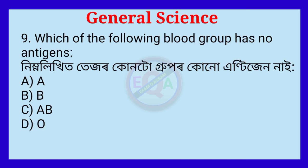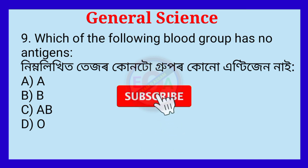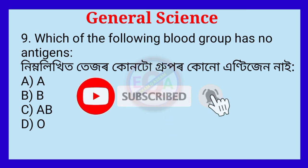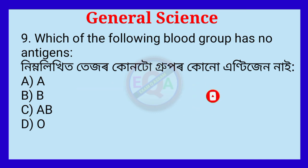Question number 9. Which of the following blood groups has no antigens? The correct answer is: group O.